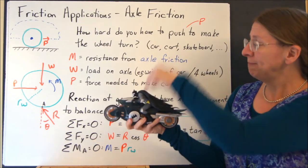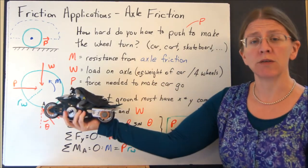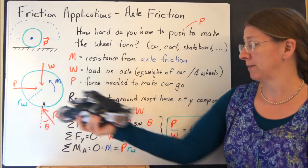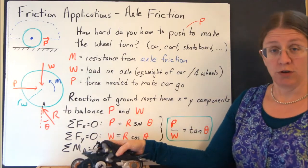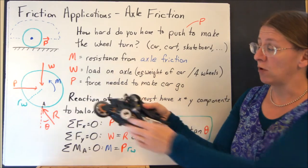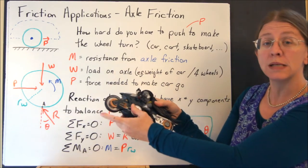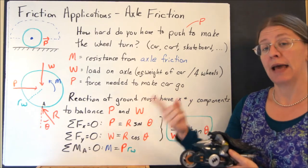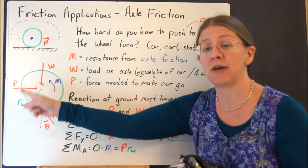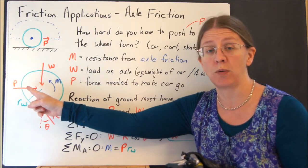W is the weight of our Batman. P is what I'm looking for. How hard do I have to keep this going? There has to be a reaction at the ground. If I'm looking at this wheel, what's happening at this wheel? The reaction at the ground has to have an X and a Y component, because I have X and Y forces applied to my wheel.